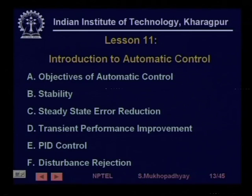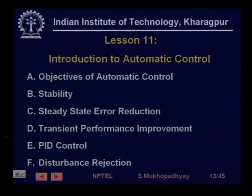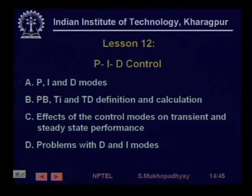In automatic control, we first talked about the basic purpose of control and the typical performance issues like stability, steady-state errors, and transient response — what is the goal of a controller — and then the sources that create problems in control like disturbance. Having understood these general concepts, we first took up PID control. Even with so much advanced control available, about 80 to 90 percent of all industrial controllers are still PID.